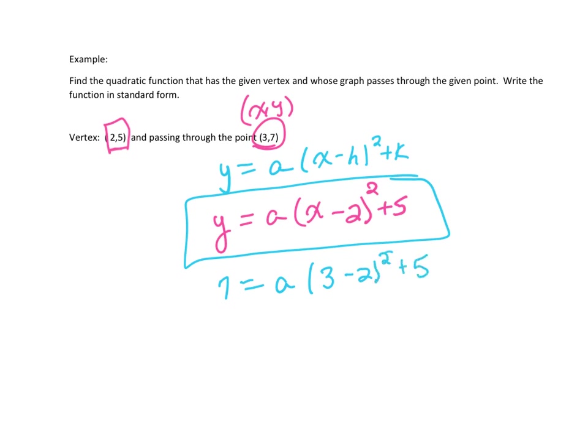And I need to solve—if you notice what we've got to solve for here is a, and that's what we need, that's the piece of information that's missing from this equation. So let's solve this. So we get 7 = a(3 - 2)² + 5, so three minus two is one squared, which is just one, and then plus five. So this is saying a + 5 = 7. If we subtract five, then we find that a equals two.